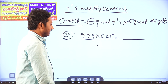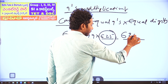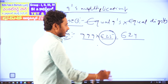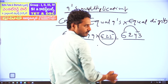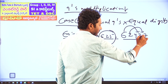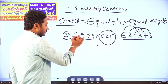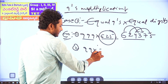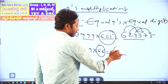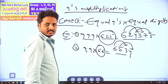For example, 9 × 625 — equal 9s into equal digits, easy. The answer: decrease by 1 gives 624, then each digit's complement from 9: 6 complements 9 gives 3, 2 complements 9 gives 7, 4 complements 9 gives 5 — wait, answer is 5625. Another example: 99 × 66 — equal 9s, equal digits. Decrease 66 by 1 gives 65; 6 complement 9 is 3, 5 complement 9 is 4. Answer: 6534.